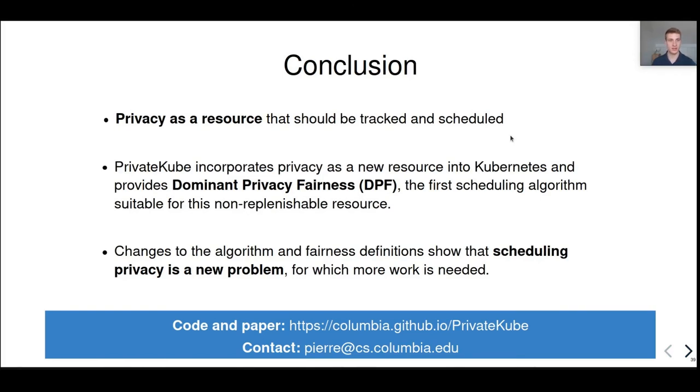Currently, machine learning workloads consume user data and privacy without accounting. This is dangerous in the context of evolving privacy attacks against machine learning. This is why we must start treating privacy as a resource. More precisely, privacy is a scarce resource that we should carefully track and schedule. And we can do that thanks to differential privacy and its composition properties. With PrivateKube, we incorporate privacy as a new type of resource directly into Kubernetes. We also provide dominant privacy fairness, the first scheduling algorithm for the privacy resource. The changes to this algorithm and the fairness definitions show that scheduling privacy is a new problem. And there is much more work to be done to make the best use of this limited resource, user's privacy. Thank you.